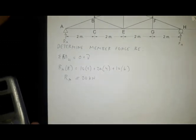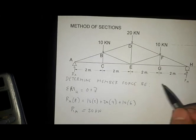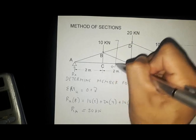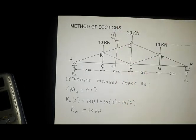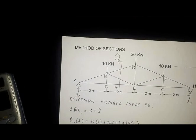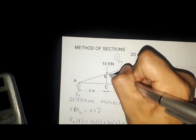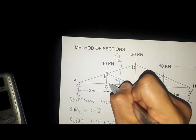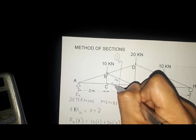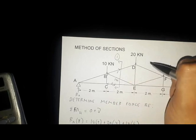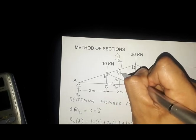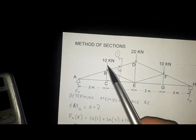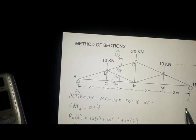Now let's cut a section here. Let's call this Section 1. Within Section 1, we have the following forces: we have FBE, we have FCE, and FBD. We are to consider these forces and the reactions at the support.